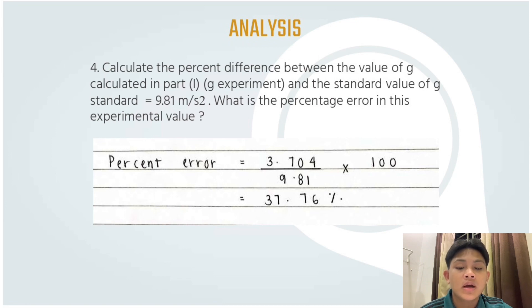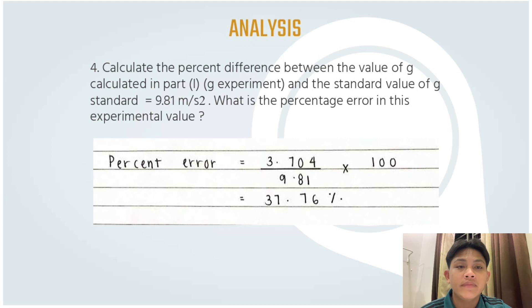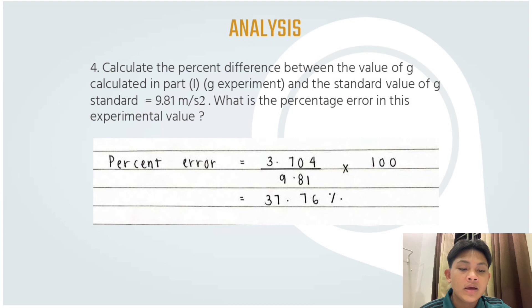For analysis number four, we calculate the percent difference between the experimental value of g and the standard value of g = 9.81 m/s². The percent error is calculated as: percent error = (|g_experiment - g_standard| / g_standard) × 100 = (3.704 / 9.81) × 100, giving a percent error of 37.76%.